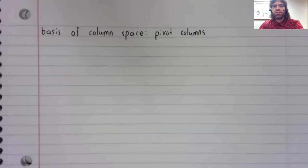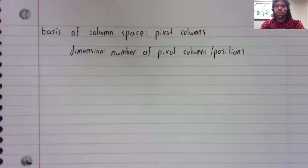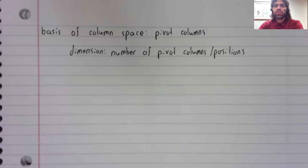The basis of a column space is the pivot columns of the matrix. Therefore, the dimension is the number of pivot columns, which is the number of pivot positions.